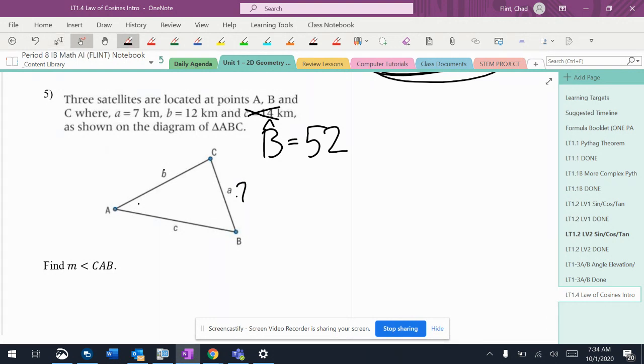So A is 7, we're going to put a 7 there. B is 12, we'll put a 12 there. Angle B is 52, and it wants to know angle CAB, which is right there.